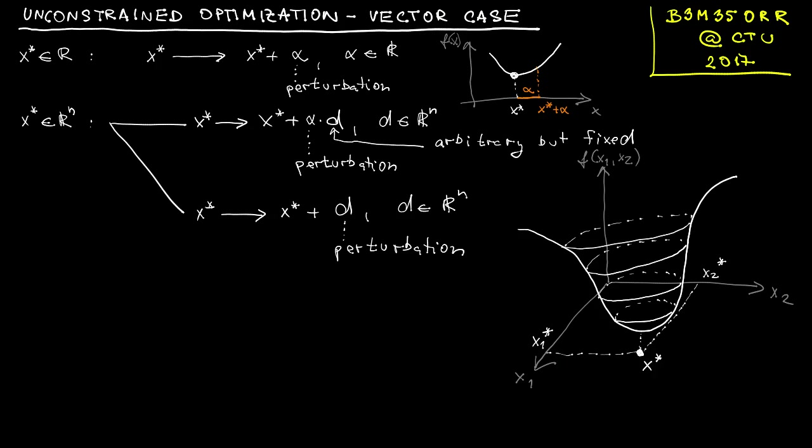And now, the first approach corresponds to the situation that I simply fix the direction in the plane, in the x1 and x2 plane, and then only investigate how the function changes if I perturb the vector variable x away from x star only along the orange line. The other approach can be explained as if I was considering perturbation in all directions and sizes around x star simultaneously. But now let's start with the first approach.